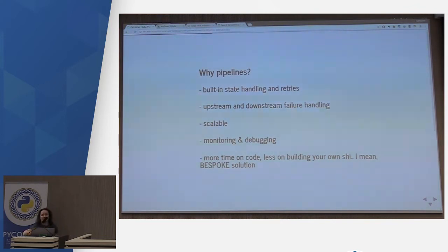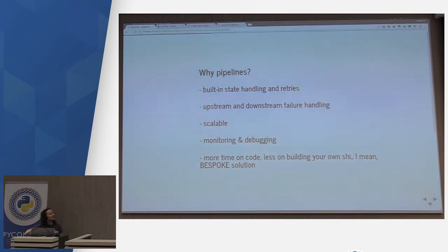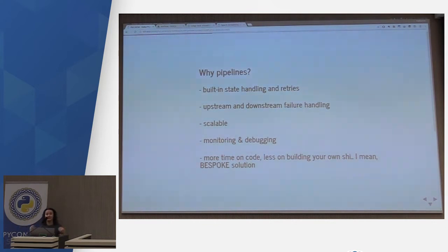Upstream and downstream failure handling is important. You need to know when building these pipelines whether something failed at the beginning, middle, or end, and where you can pick up from that failure point. Most often it's failing because somebody deployed a bug — software developers are the biggest problem when it comes to systems. So you need to locate where the bug is and let the responsible party know they need to run the test suite more often. It should also be scalable — something you shouldn't have to think about if you're more data-focused, rather than thinking about how to parallelize things.